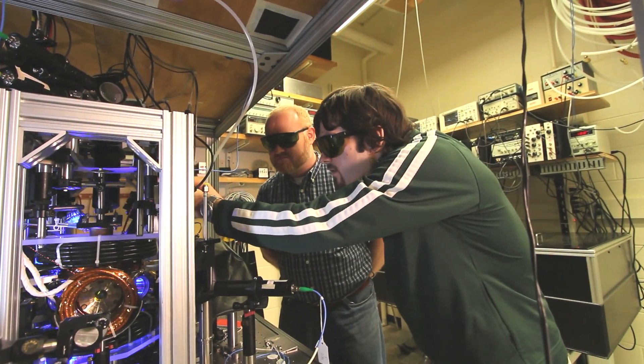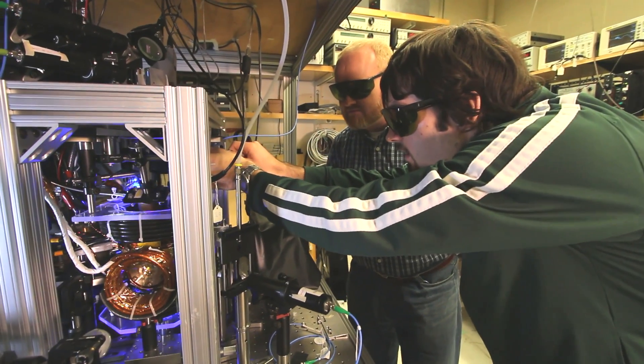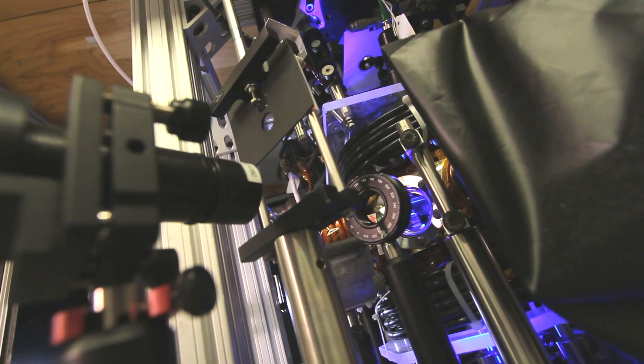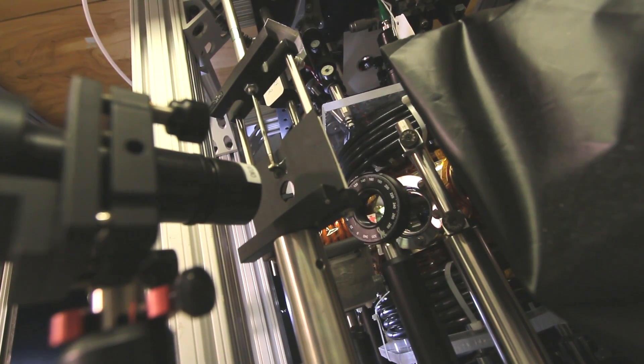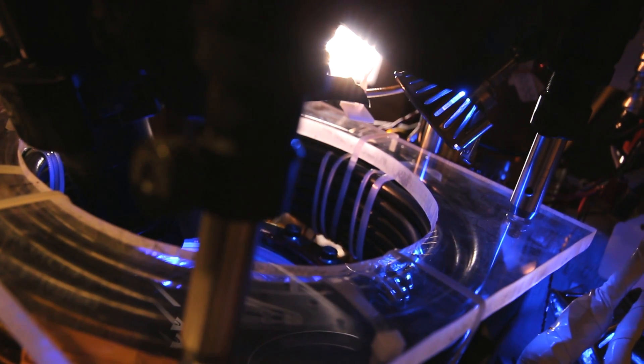So in our experiment, we don't use a single atom, but we use about 40,000 atoms. And what we're controlling in this case is the orientation of the atoms, which is given by the magnetic moment or the spin of each atom.